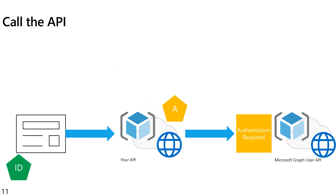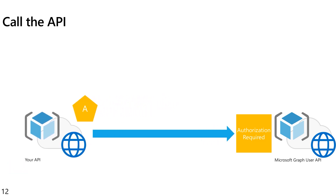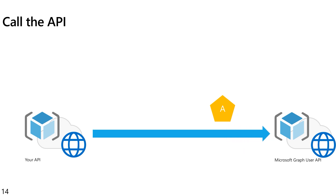Azure AD issues a token for the API to call Microsoft Graph on behalf of the original user who signed into the application. At this point it's a standard access token that can simply be provided to the Microsoft Graph API. Now Microsoft Graph is the one figuring out if this user is actually allowed access, because the user's identity is embedded in that token. Microsoft Graph can check if this user is truly allowed to perform whatever operation is being requested, so the enforcement lives where it's supposed to — in the Microsoft Graph API and not in your custom API.